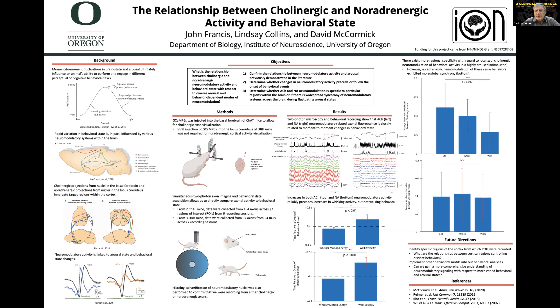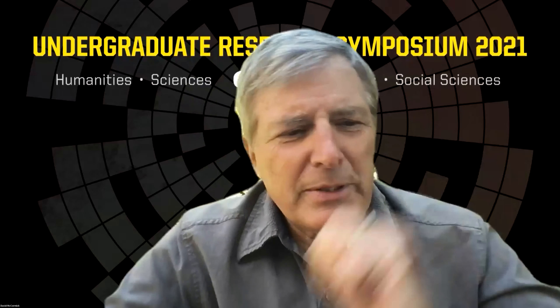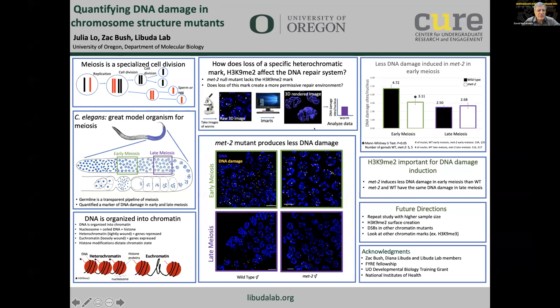John's presentation concluded and the moderator introduced Julia Lowe, who worked on quantifying DNA damage in chromosome structure mutants. Meiosis is a specialized cell division resulting in haploid sperm and eggs, characterized by one round of DNA replication followed by two rounds of cell division.